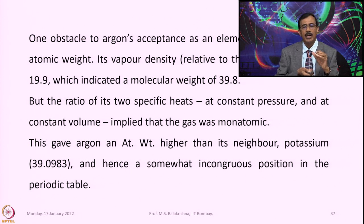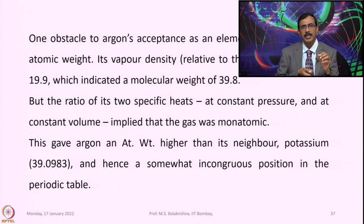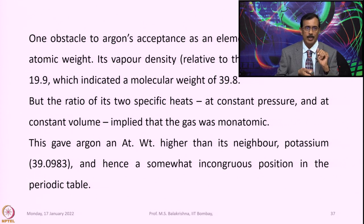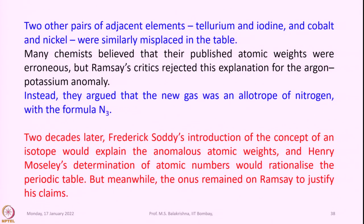This gave Argon an atomic weight higher than its neighboring potassium — potassium's atomic weight is precisely 39.0983 — and hence a somewhat incongruous position in the periodic table. Two other pairs of adjacent elements, tellurium and iodine and cobalt and nickel, were similarly misplaced in the table.